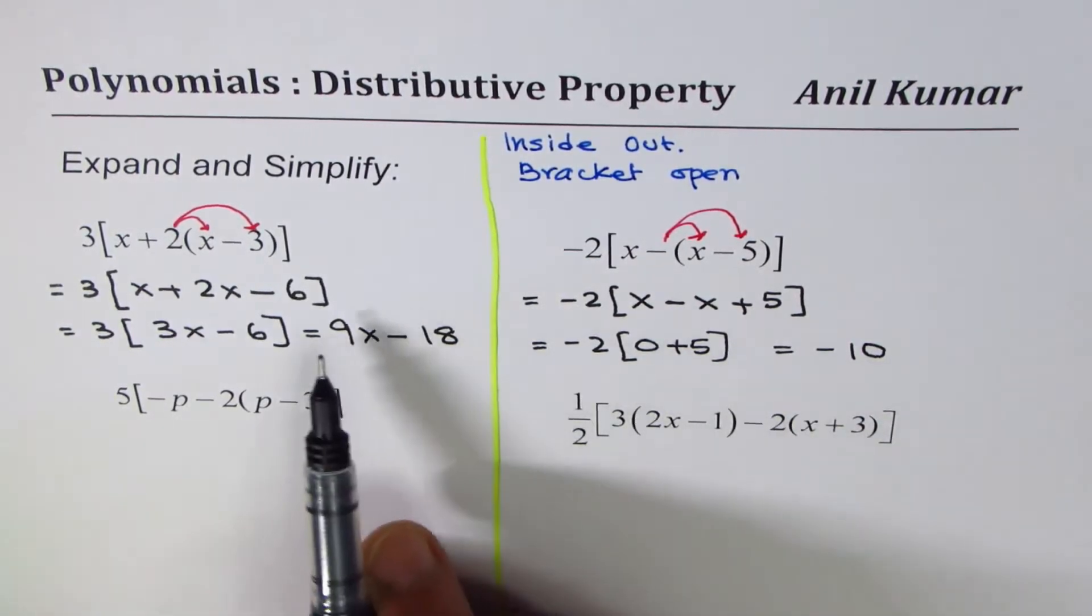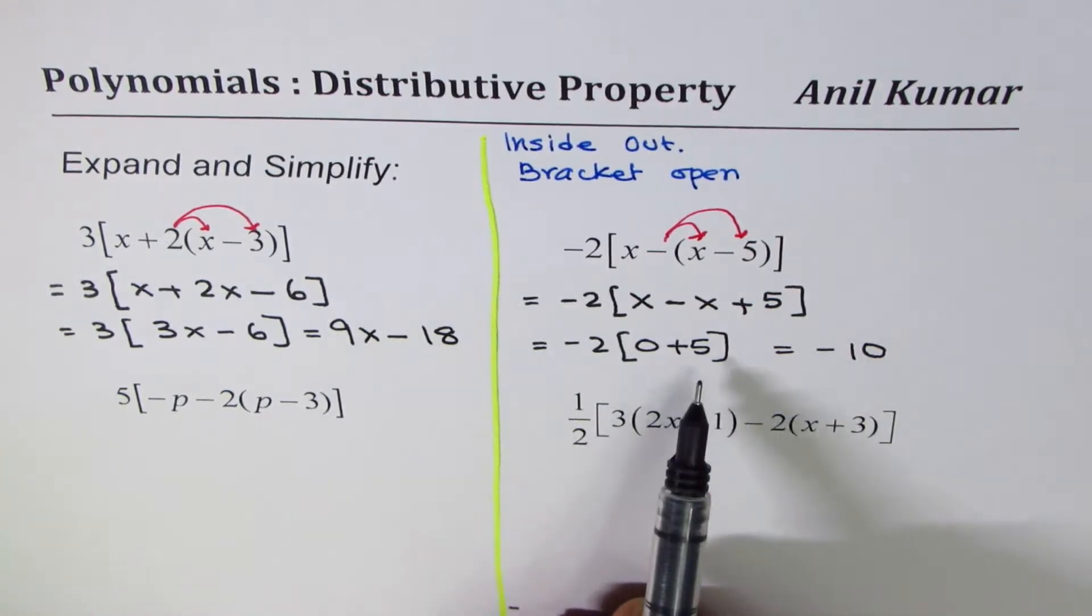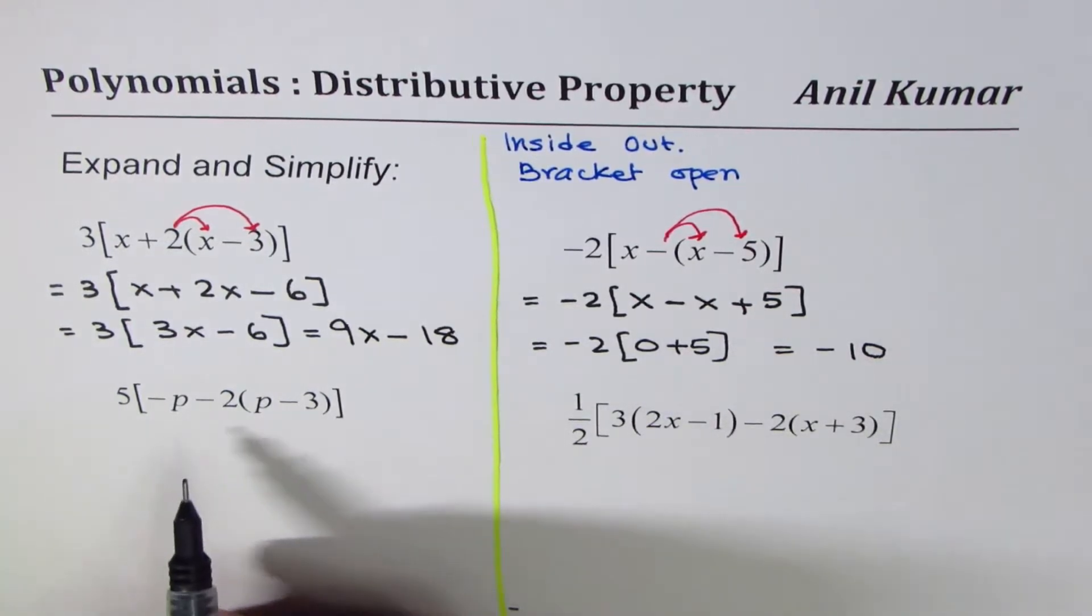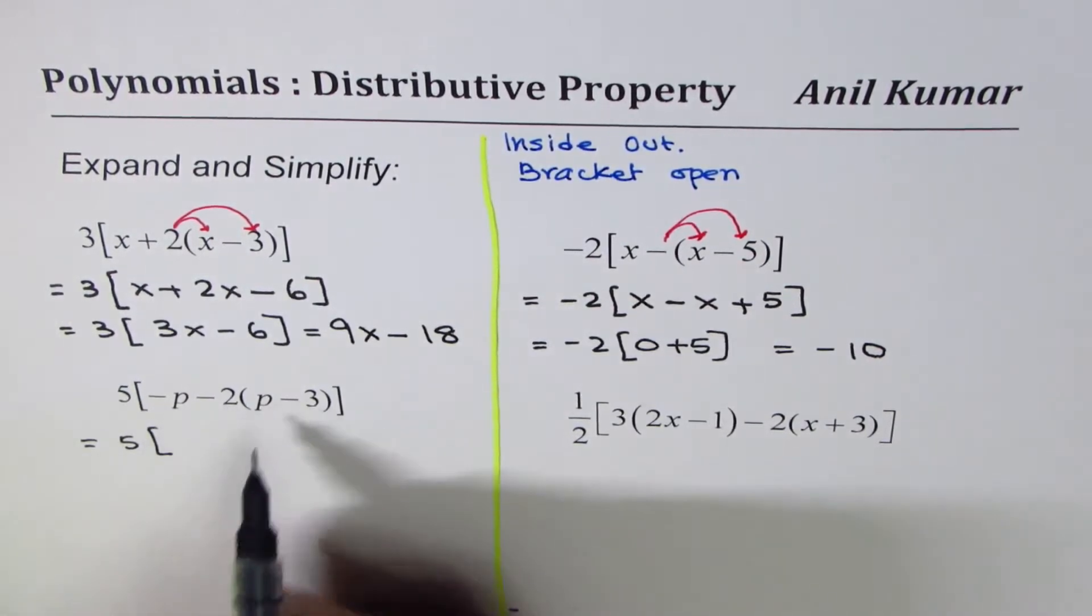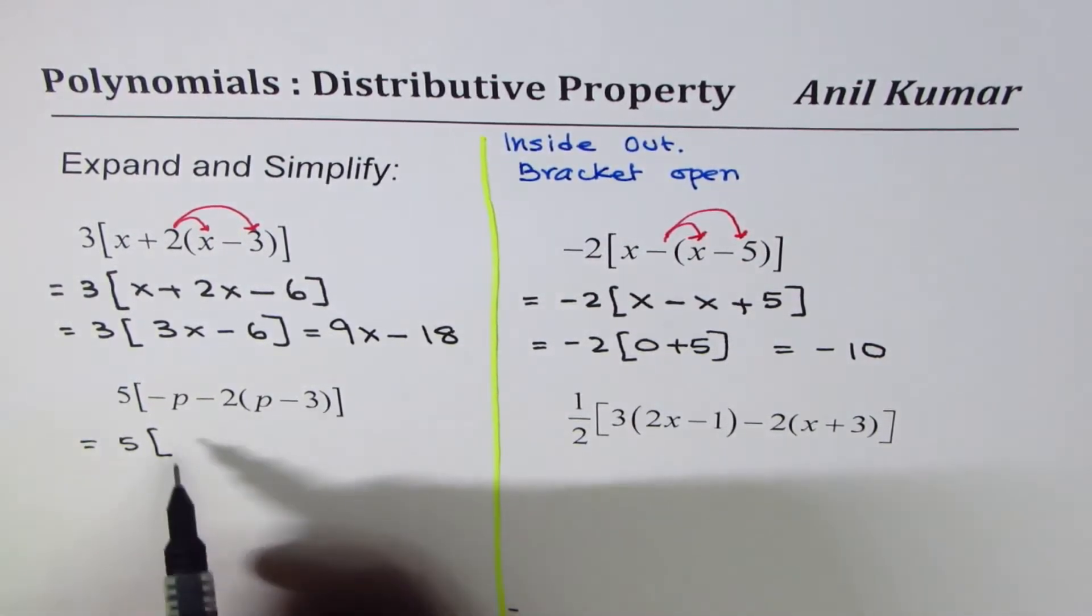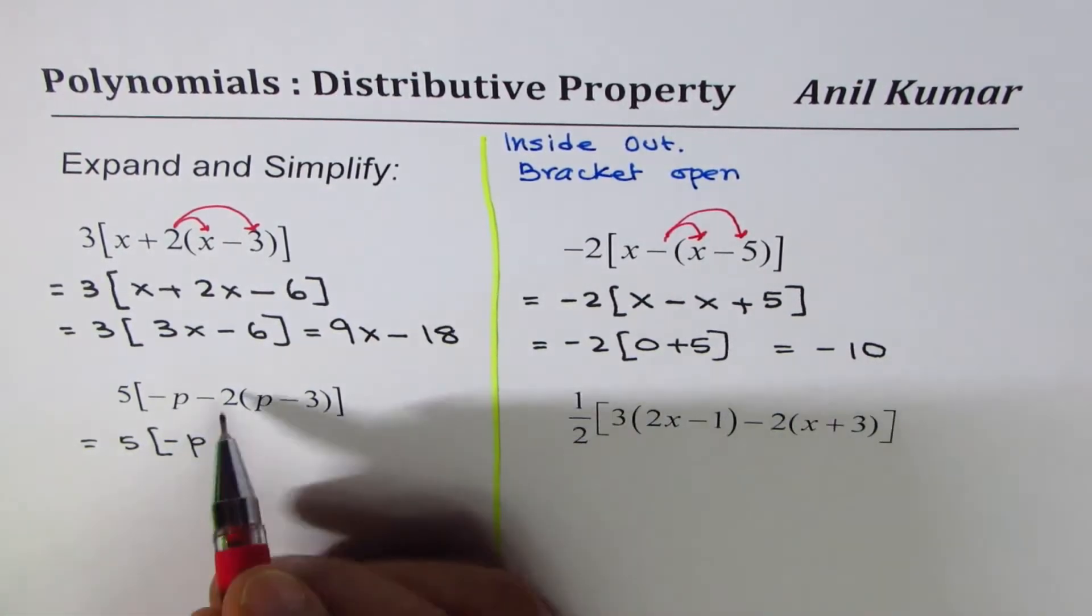So what you see here is that you can get an expression which may or may not have the variable. Let's continue. So we'll write equal to 5, within bracket. We'll do this bracket first, so copy minus p as such.